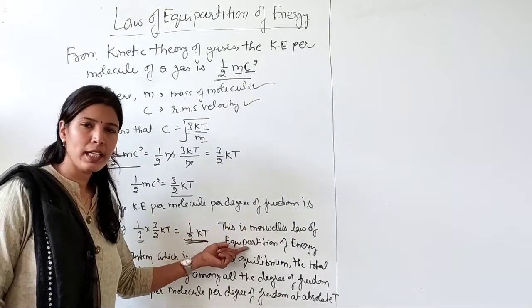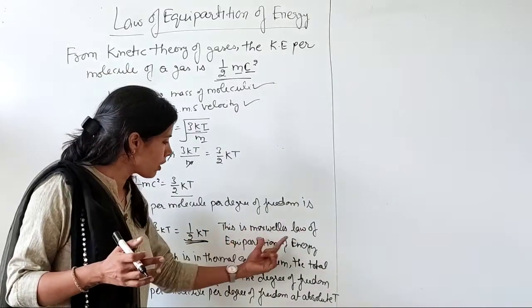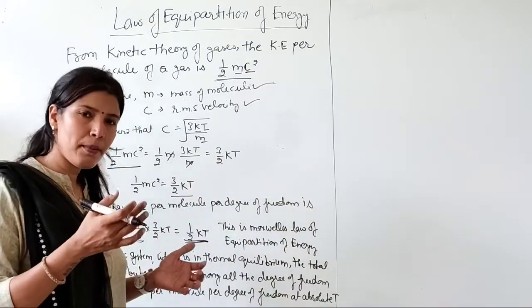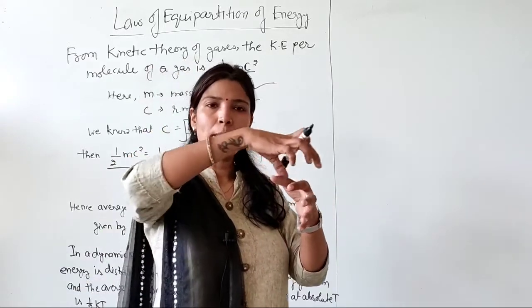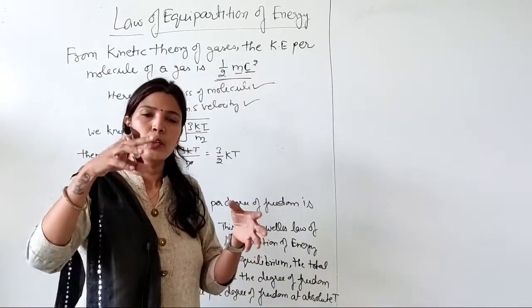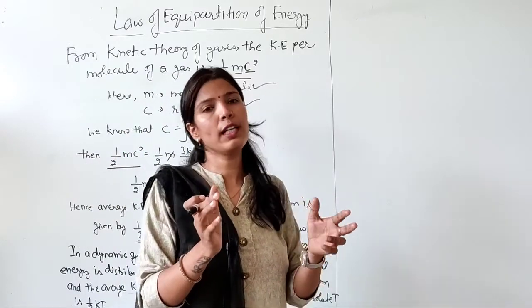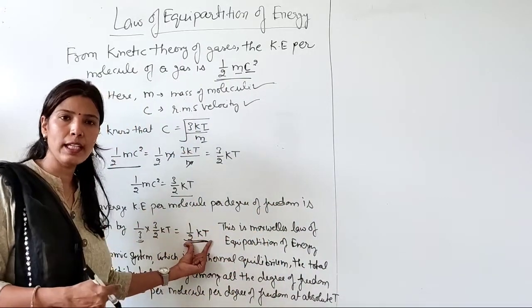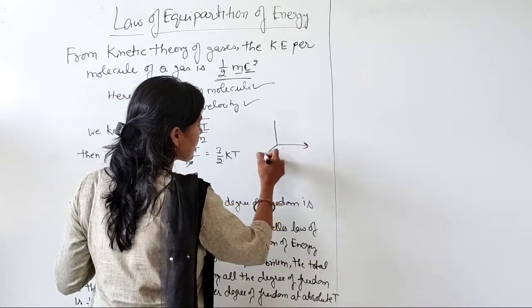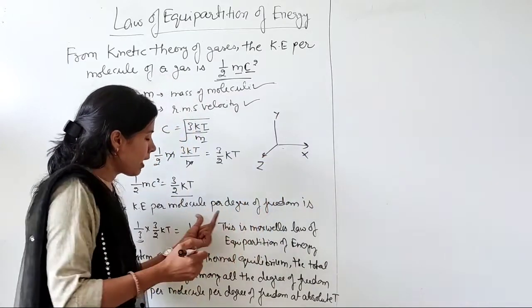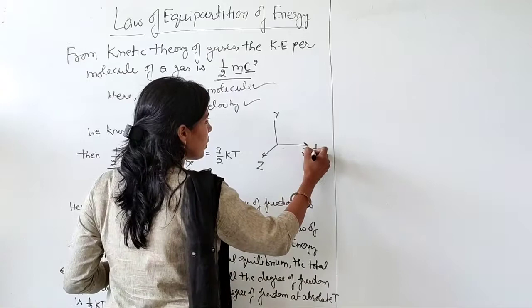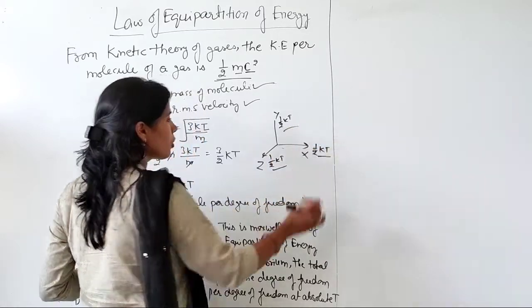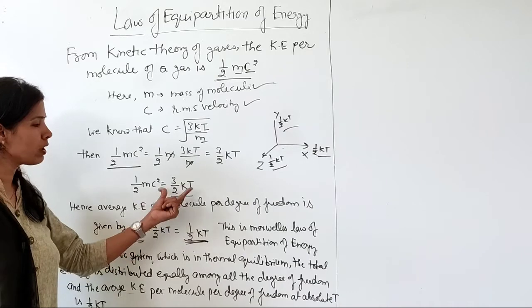So the kinetic energy per degree of freedom is half kT. This is Maxwell's law of equipartition of energy. So from this law we understand that the total kinetic energy per molecule is 3 by 2 kT. In a gas system, energy is equally distributed in every direction. So for translatory motion, total degree of freedom is 3, and energy associated with each degree of freedom is half kT. So the three degrees of freedom along x, y, z directions have equal energy distributed in all three directions, which is why the total average kinetic energy per molecule is 3 by 2 kT.